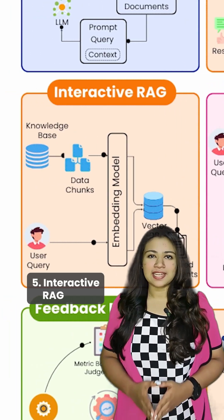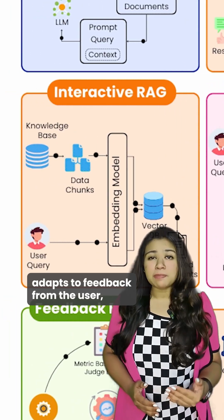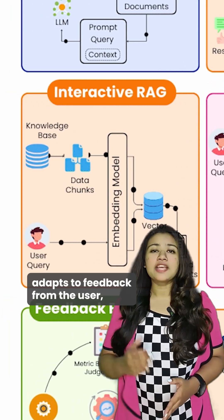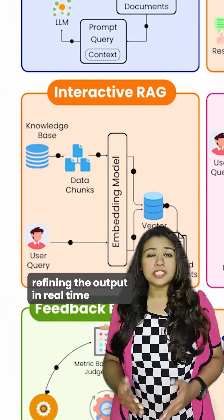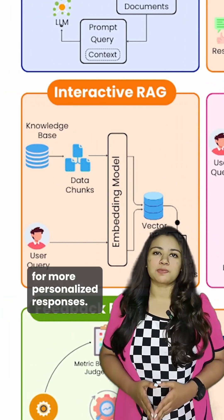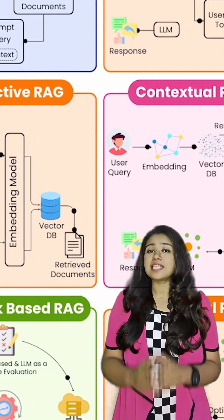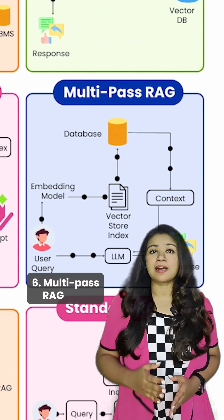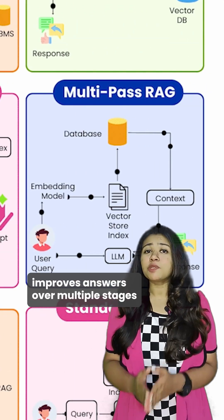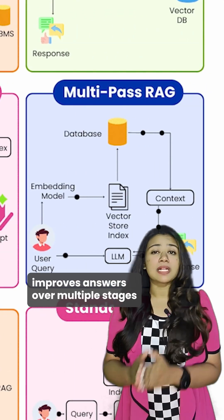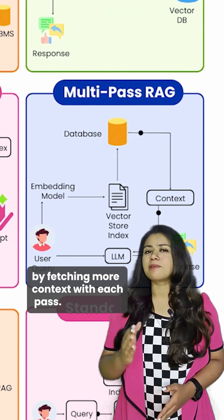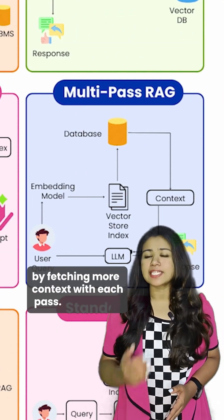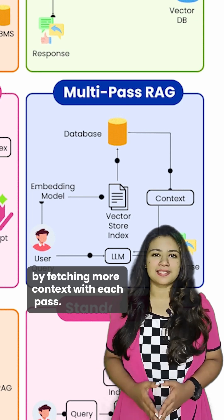5. Interactive RAG: adapts to feedback from the user, refining the output in real-time for more personalized responses. 6. Multi-pass RAG: improves answers over multiple stages by fetching more context with each pass.